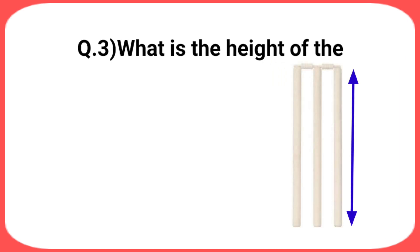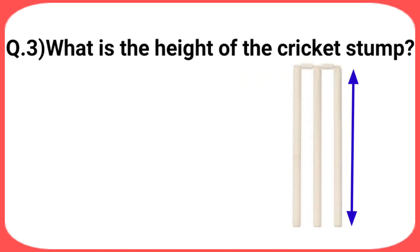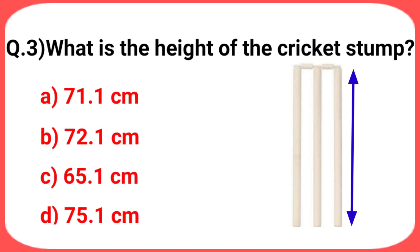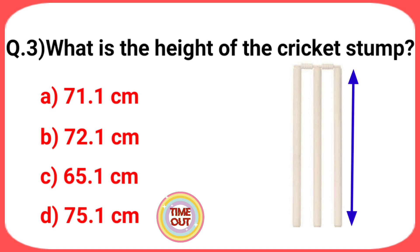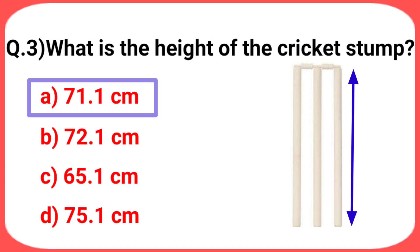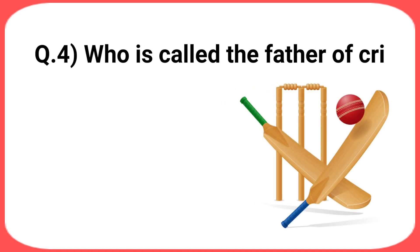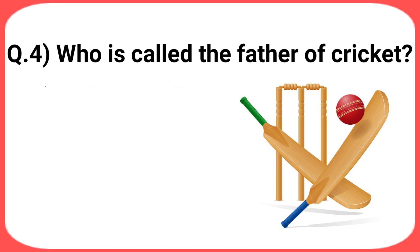Next question: what is the height of the cricket stump? Your options are: a) 71.1 cm, b) 72.1 cm, c) 65.1 cm, d) 75.1 cm. The answer is option a: 71.1 cm.